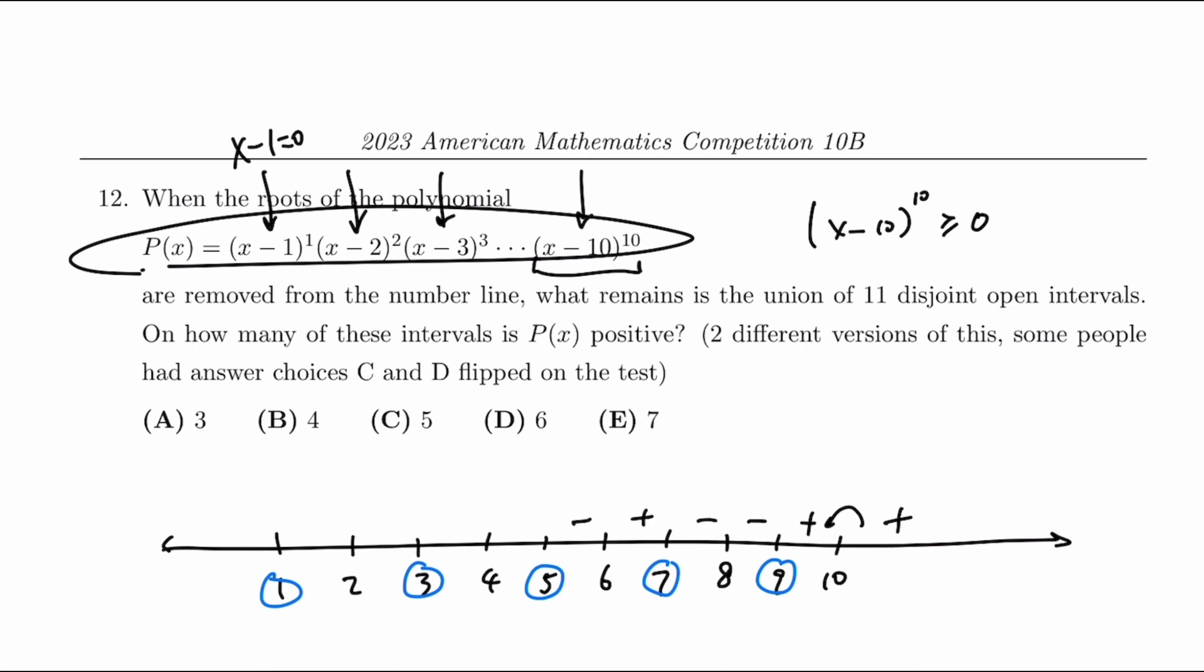So minus, minus, plus, plus, minus, minus, plus, plus, minus, and we just have to count the number of segments that is positive, which is 6 or answer choice D.